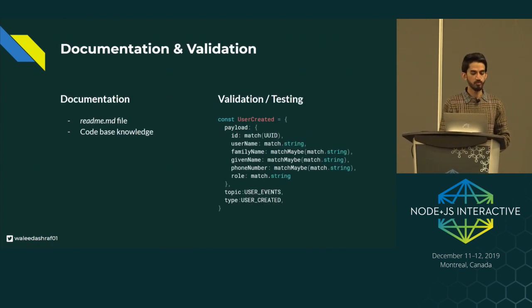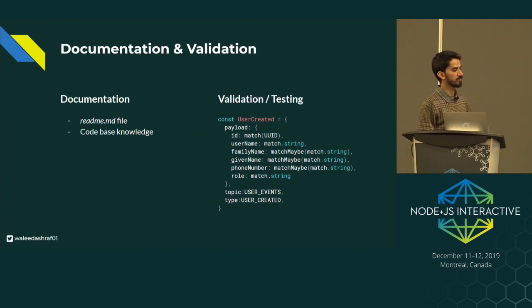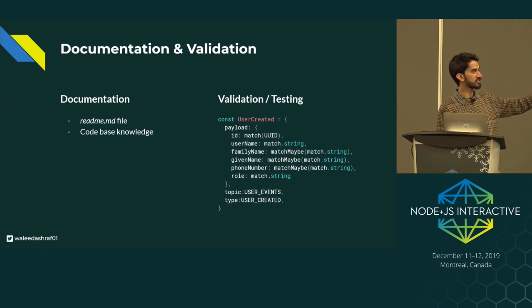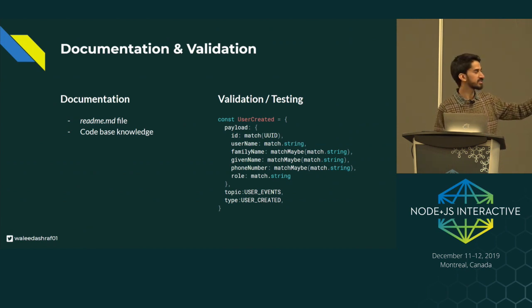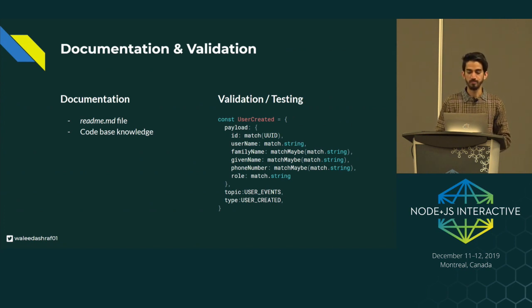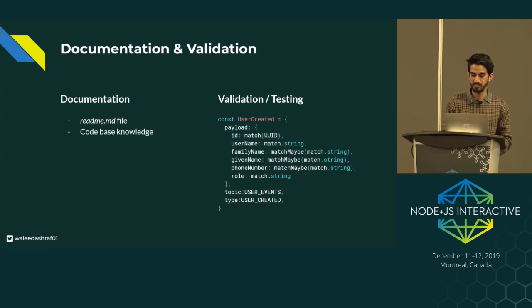Previously we were doing something like this: we had a README markdown file, and someone who knew the code base would know what was in the payload. For testing, we had hard-coded schema in the services where we'd write down all the properties and match them using the Assert library or something similar. But this gets outdated, and whenever you want to update, you have to write it down as hard-coded.